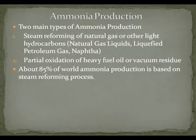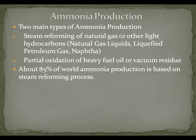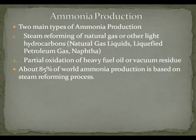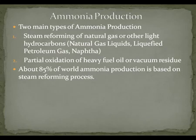There are currently two main types of ammonia production processes in operation around the world. The first is steam reforming of natural gas or other light hydrocarbons, for example natural gas liquids or liquified petroleum gas. The other pathway is partial oxidation of heavy fuel oil or vacuum residue. About 85% of world ammonia production is based on a steam reforming process.